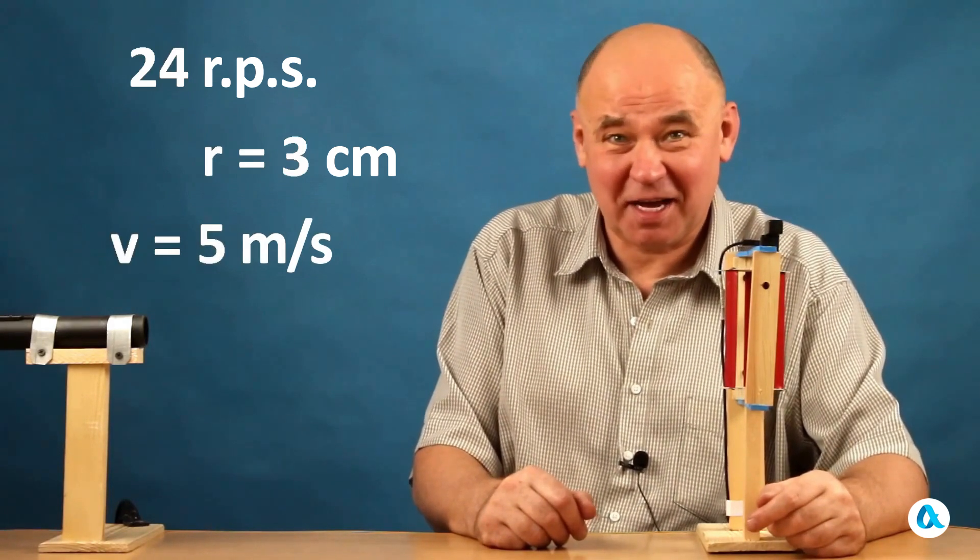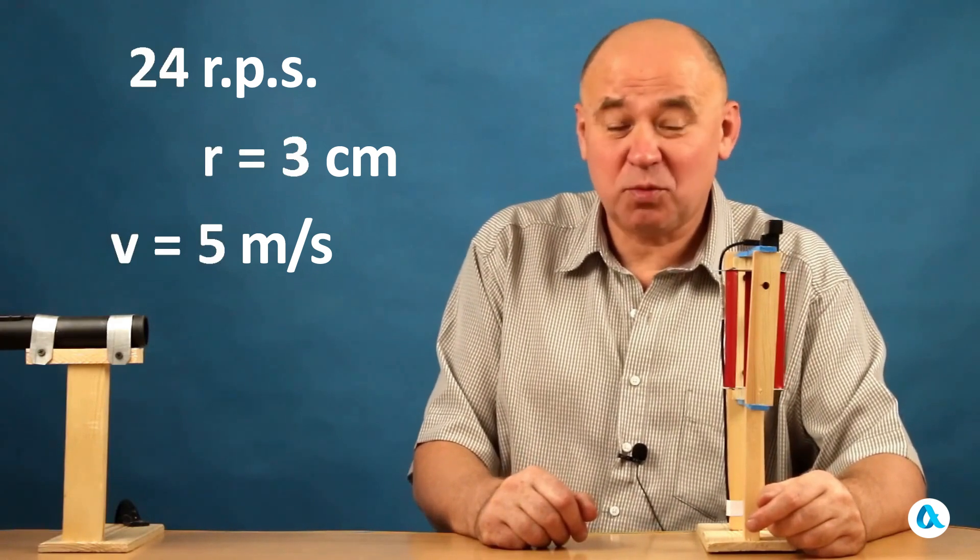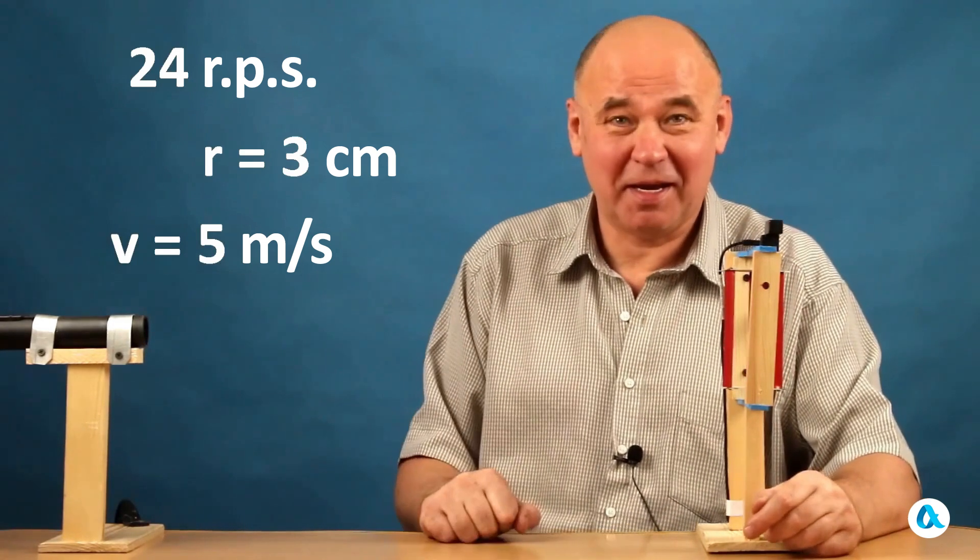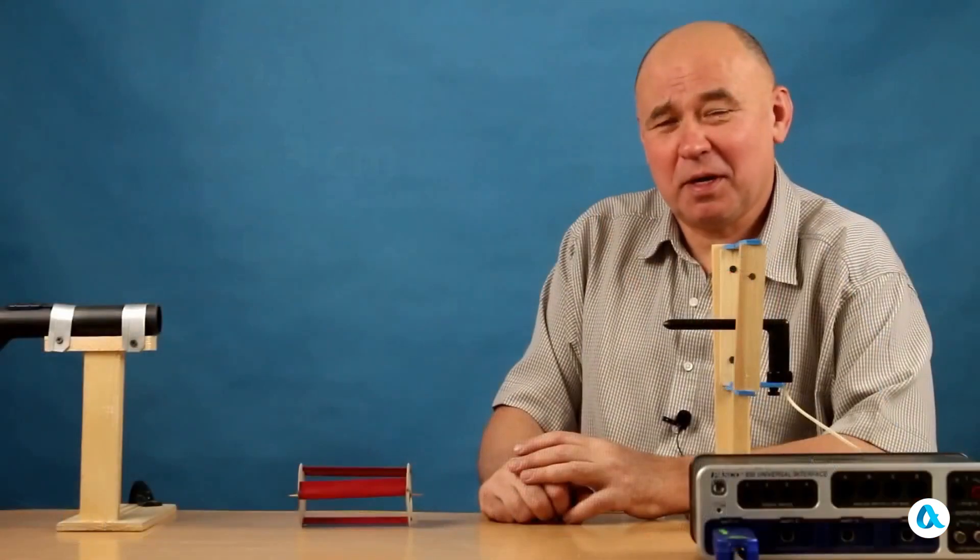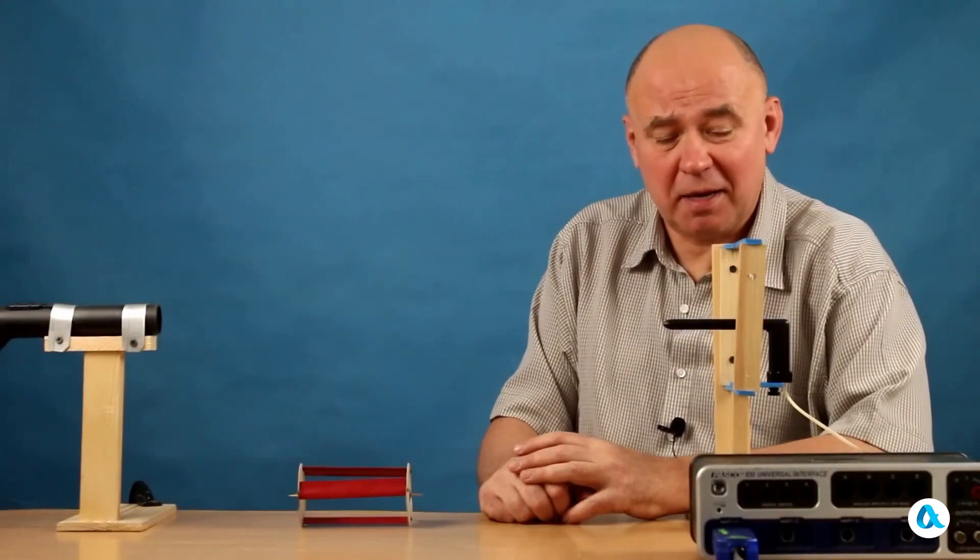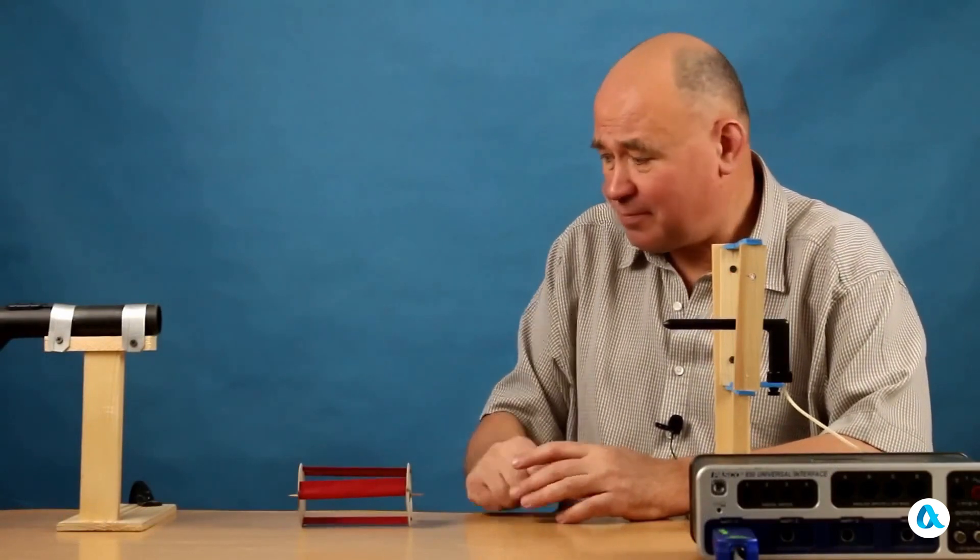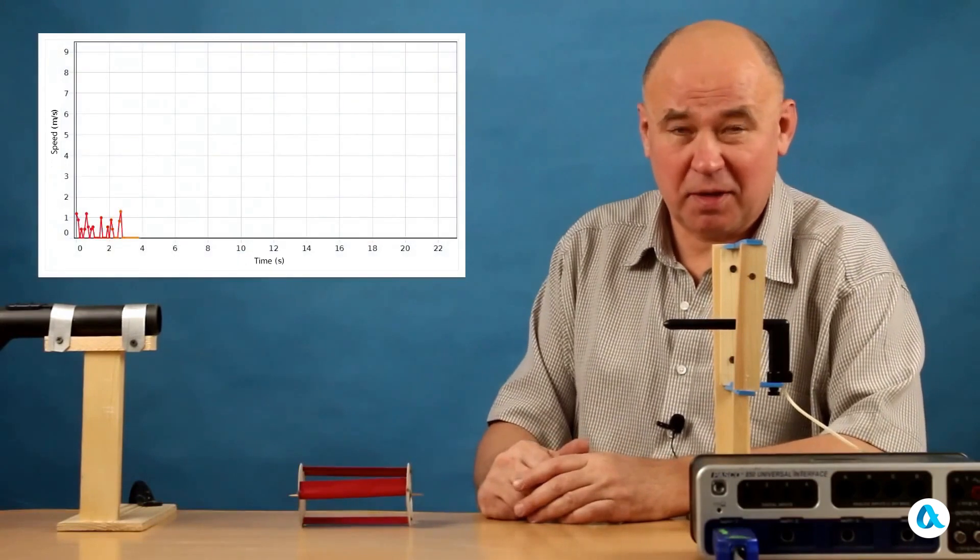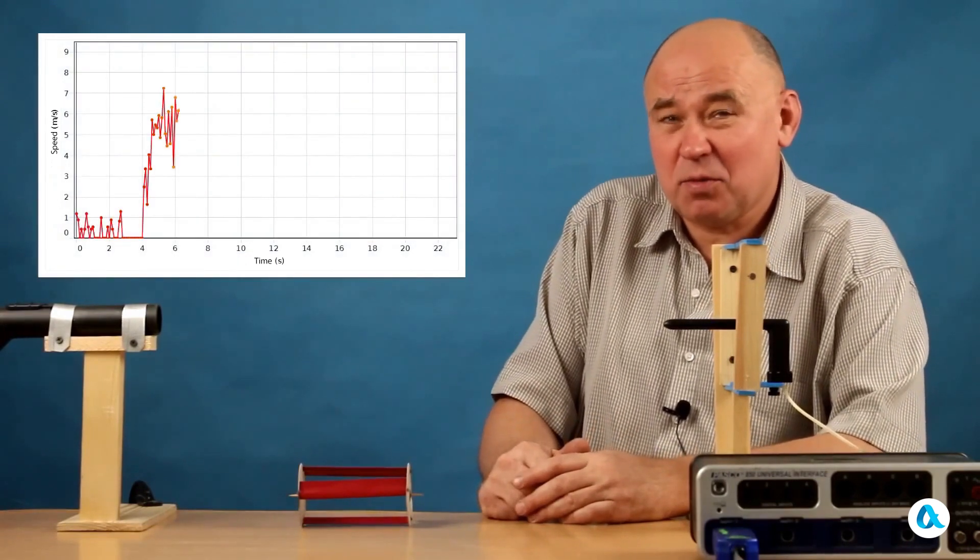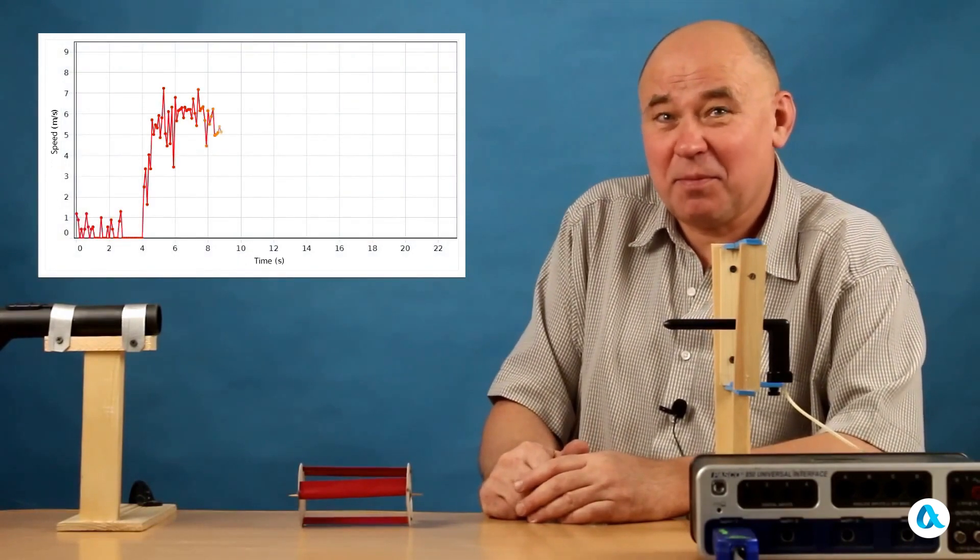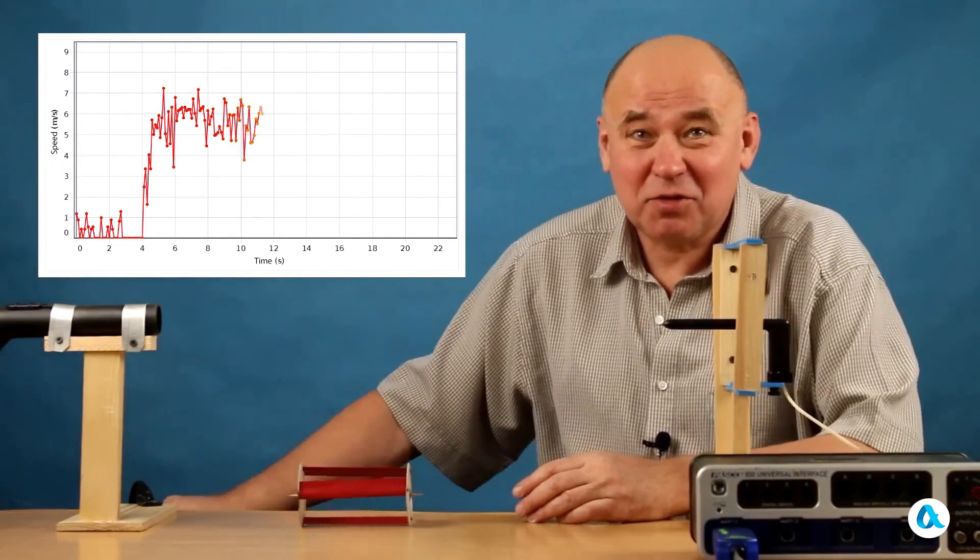And of course, it is desirable to compare it with the speed at which the airflow from this tube impacts the rotor. For this purpose, I remove the spinner from the frame and insert the Pitot tube here. I start the airflow, and see that the speed of this flow is currently observed to be approximately 5.5 meters per second.